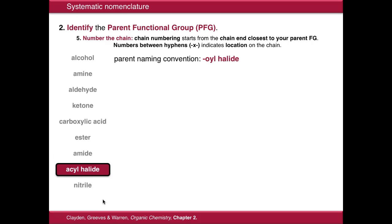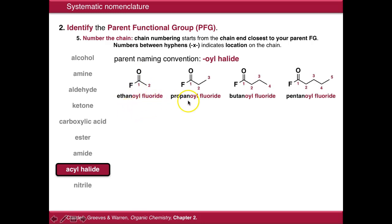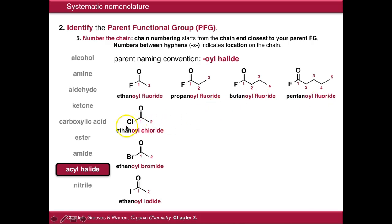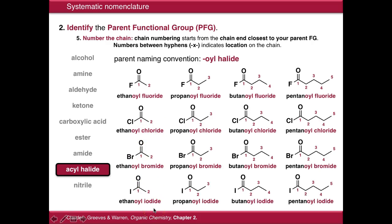Acid halides, or acyl halides, end in -oyl halide as their naming, and that's specific for which halide you're using. So in this case we have ethanoyl fluoride, because we have two carbons in the chain and fluorine is our halogen of choice. If we move to higher carbon chains, it simply moves up: propanoyl fluoride, butanoyl fluoride, pentanoyl fluoride. If we change the halogen, we just change it to chloride, bromide, and iodide, and we then have all the various permutations.